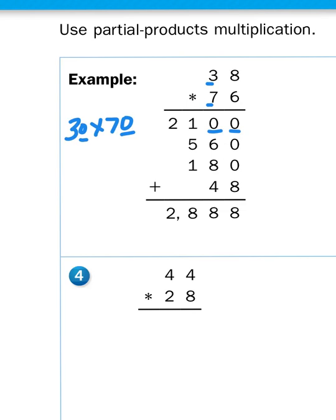560 is the product of 8 times 70. 180 is the product of 30 times 6. And 48 is the product of 8 times 6. So again, 38 or 3 tens and 8 ones times 76 which is 7 tens and 6 ones, keep all those place values in mind when you're multiplying and you will be able to come up with any answer to any multiplication problem.